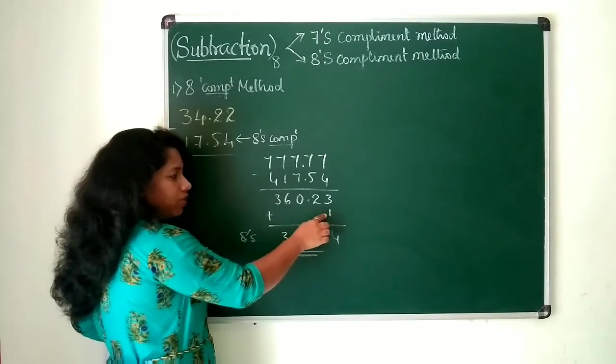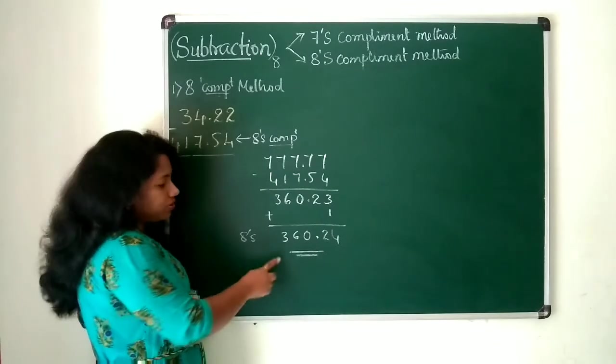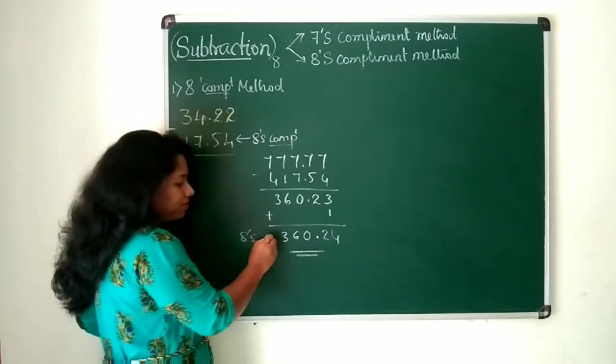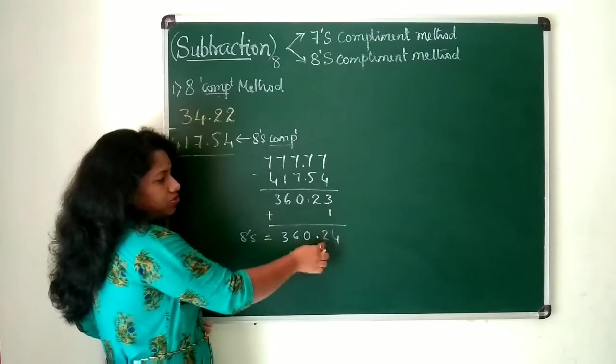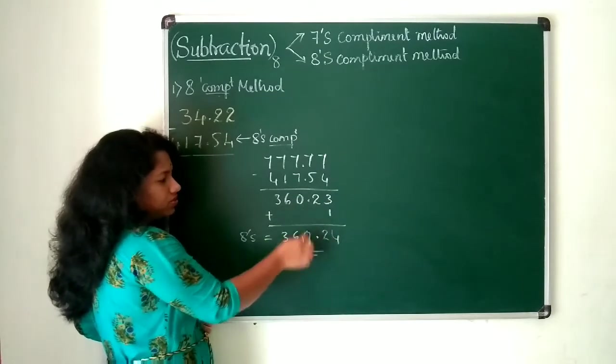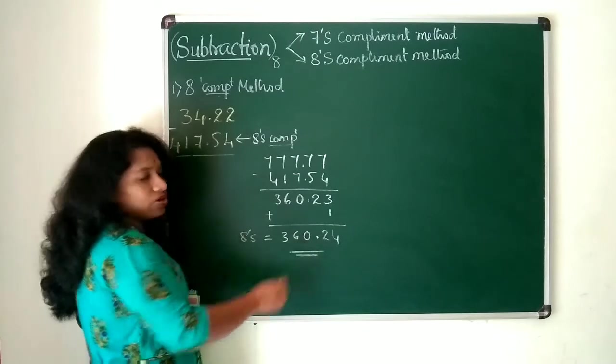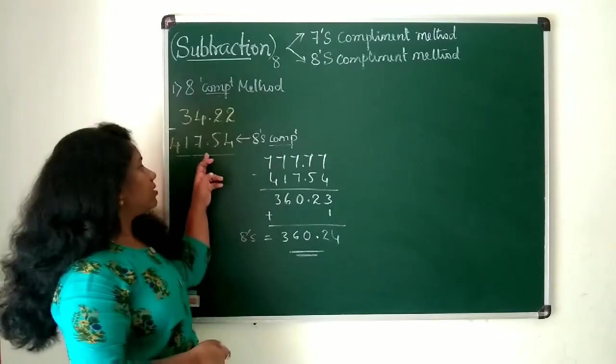When you add 1 to the 7's complemented value, you will be getting 8's complemented value. So now add 1 to it. 3 plus 1 is 4 and then 2 as it is, radix point as it is, 0, 6, 3. So this is your 8's complemented value for this subtrahend.